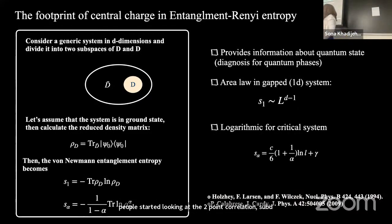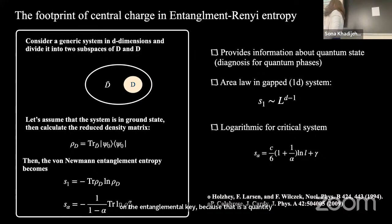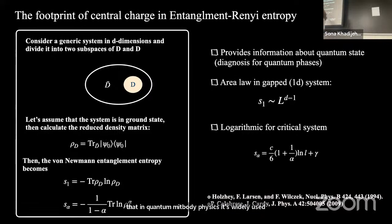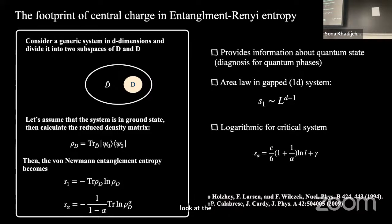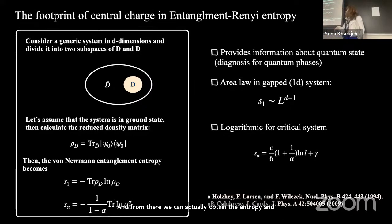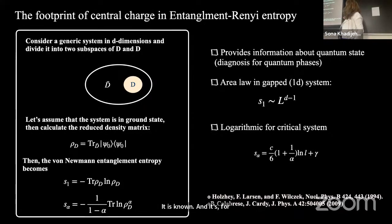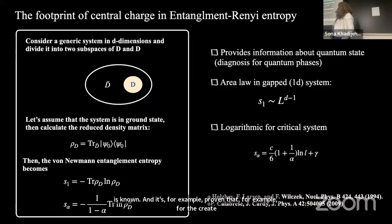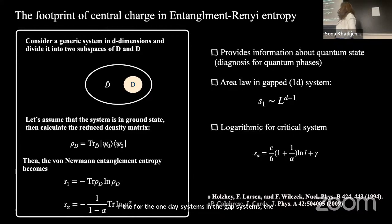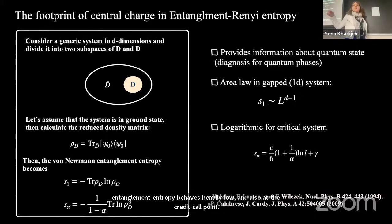Let me focus in particular on entanglement entropy, since it is widely used in quantum many-body physics. To calculate the entanglement entropy, we look at the subsystem size: we take the total system, calculate the reduced density matrix, and from there obtain the entanglement entropy and its generalization, the Rényi entanglement entropy, which depends on different moments of alpha. It is known that for 1D gapped systems, the entanglement entropy behaves as an area law, and at the critical point it has a logarithmic behavior, with the coefficient of the logarithm related to the central charge.